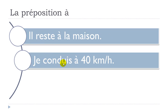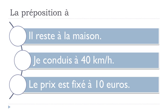Second example: we could use 'conduire', which is 'to drive'. When you want to introduce the speed, for instance 40 km/h, you would use this A. So 'at 40 km per hour': Je conduis à 40 km/heure. The last example for 'at' is for the price: à 10 euros. Le prix est fixé à 10 euros — the price is set at 10 euros. So in French, we use this preposition à.